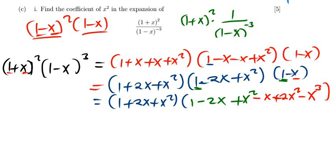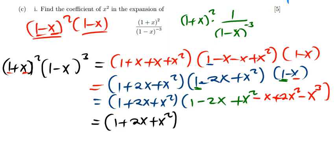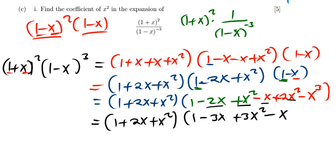Now we can simplify this. Collecting terms: 1 is alone. Negative 2x and negative x combine to give negative 3x. Then x squared and 2x squared combine to give plus 3x squared. And negative x cubed is alone, giving negative x cubed.